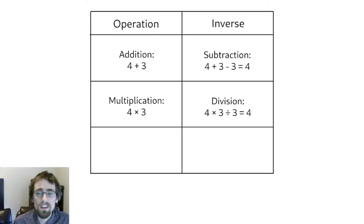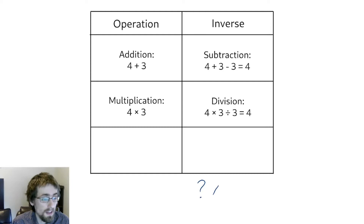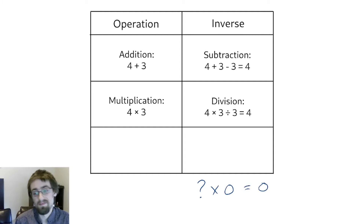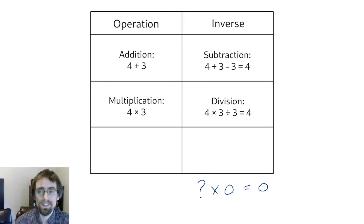Thinking about division this way also tells you why we can't divide by zero. Let's say I had a secret number that I completely forgot, and the only thing I remember is that when I multiply that number by zero, I get zero. Can you figure out what my original number must have been? Anything times zero is equal to zero, so my original number could have been anything. When we say we can't divide by zero, we're just saying we can't know for sure what that original number was.